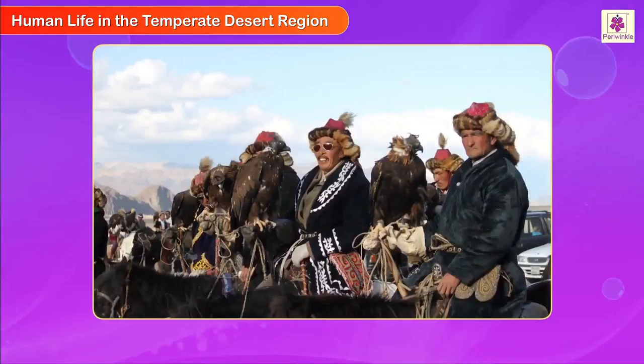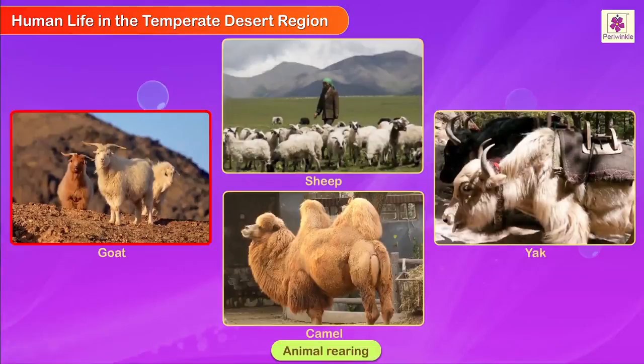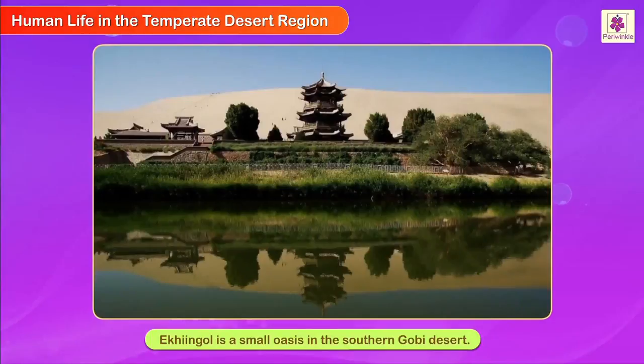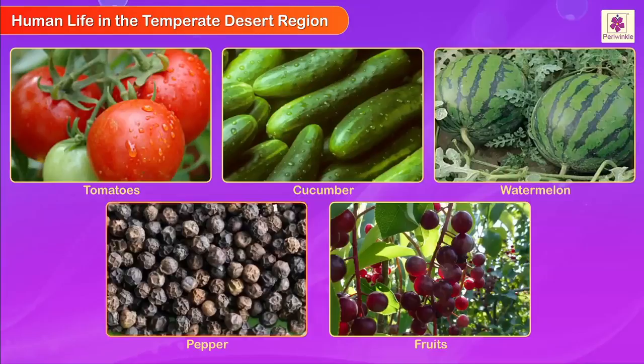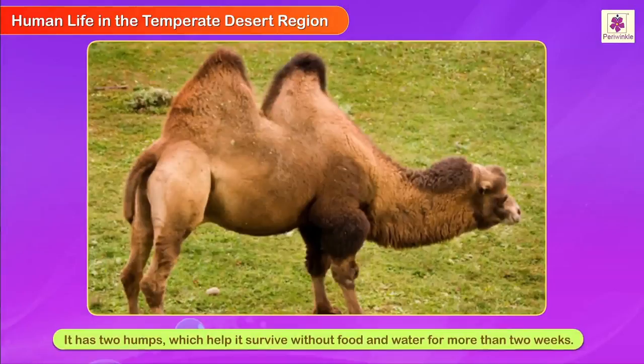Human life in the temperate desert region: Nomadic horse-riding tribes of Mongols live in the Gobi Desert. They rear goat, sheep, yaks, and camels, and grow food near oases. Ekinggol is a small oasis in the southern Gobi Desert where tomatoes, cucumber, watermelon, pepper, and some fruits are grown. The unique Bactrian camel is found in the Gobi Desert. It has two humps which help it survive without food and water for more than two weeks, making it a very useful animal for long-distance travel by pulling caravans.